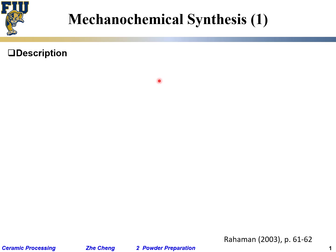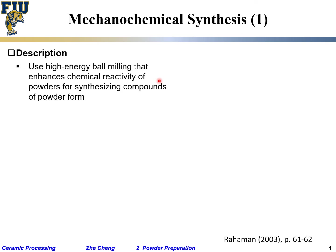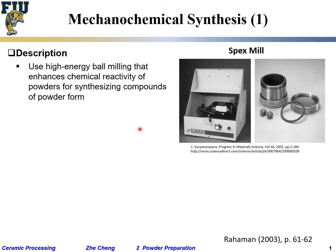The first one is mechanochemical, which means some mechanical interaction is involved in that process. Essentially, it uses high energy milling that enhances chemical reactivity for synthesizing compounds in powder form.